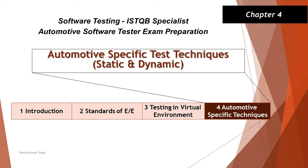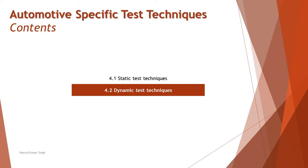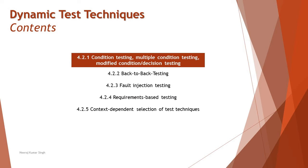Hello friends and greetings for the day. Welcome back to another tutorial on ISTQB specialist automotive tester certification. As part of this chapter we are proceeding with segment 4.2, dynamic test techniques, which has five sub-sections: 4.2.1 on techniques, 4.2.2 on back-to-back testing, 4.2.3 on fault injection testing, 4.2.4 on requirement-based testing, and 4.2.5 on context-dependent selection of test techniques.